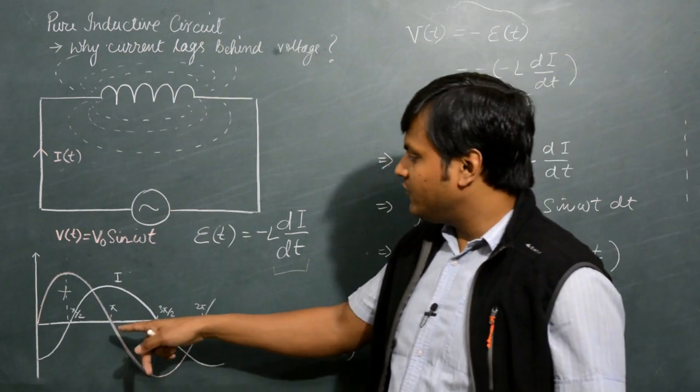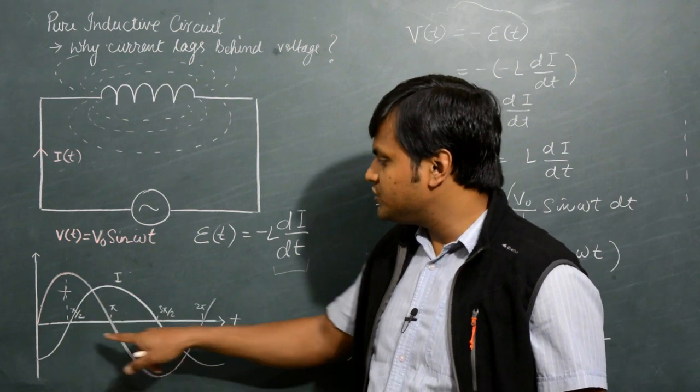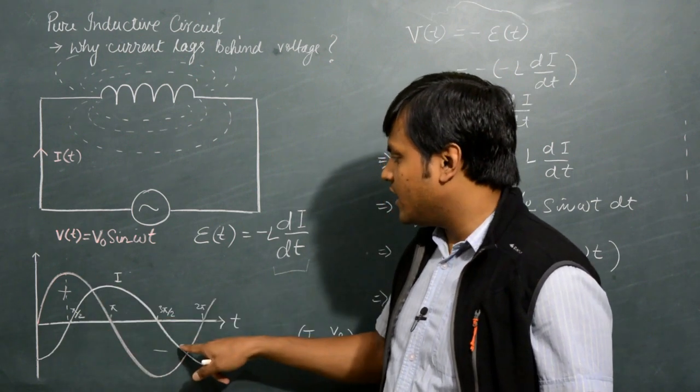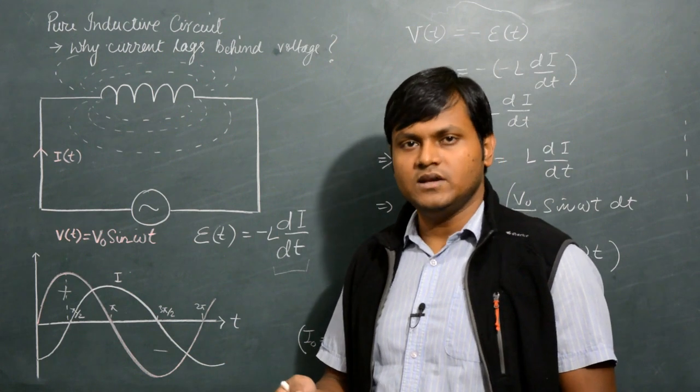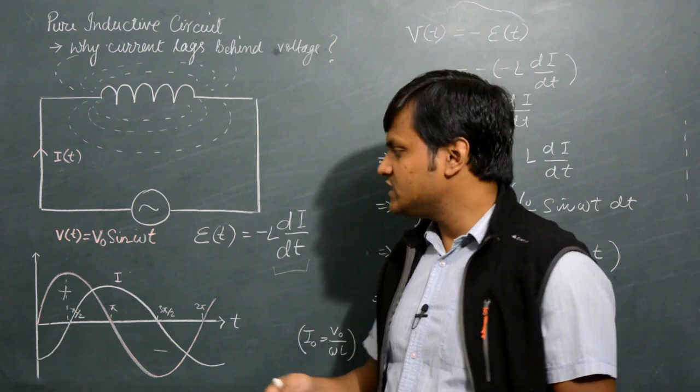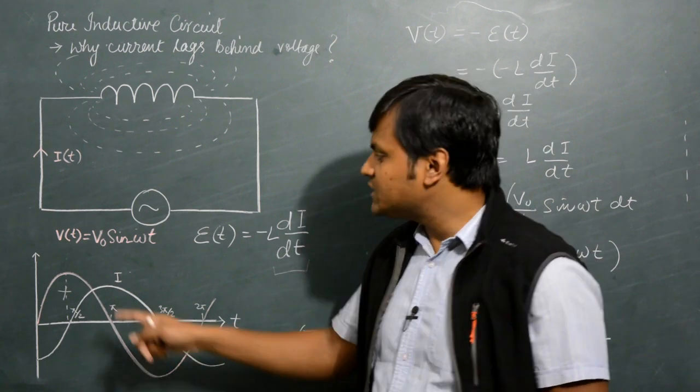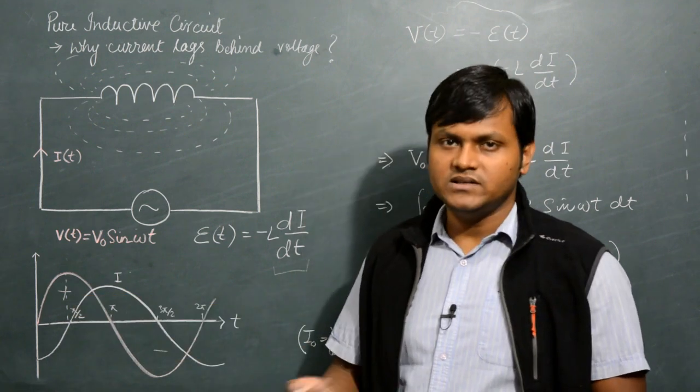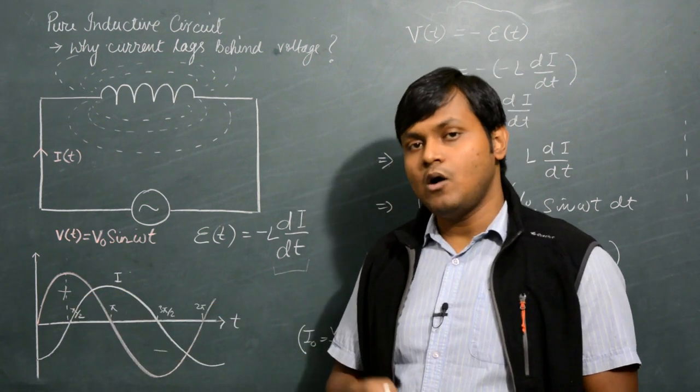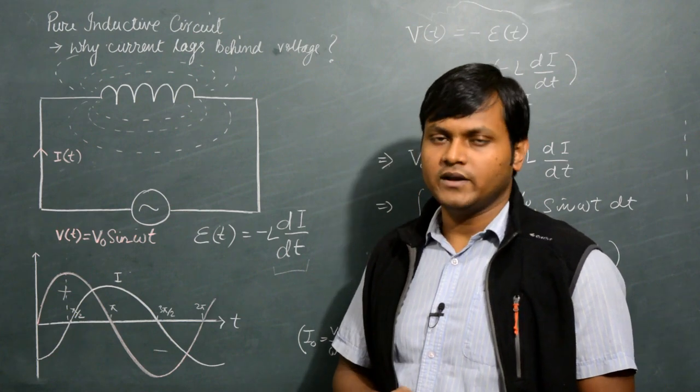As you can see in the graphical representation, this pink colored line represents the voltage and the white colored line represents the current. Both have sinusoidal dependence on their frequencies, but the phase of the current lags behind that of the voltage by 90 degrees. That is because of the nature of the inductor and how it opposes the changes in the flow of current itself.